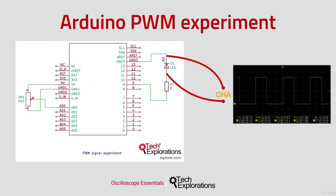To control the duty cycle of the PWM signal, we'll use a potentiometer connected to analog pin 0. We'll connect the probe of the oscilloscope directly to the pins of the LED and set the triggering mode to automatic.